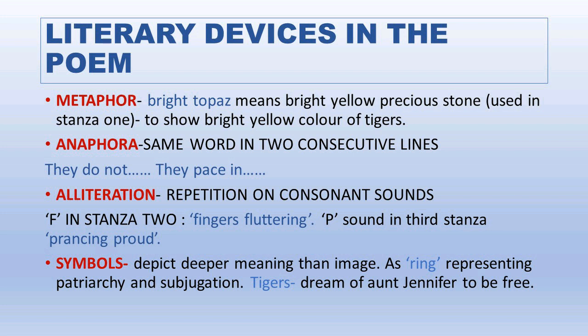Anaphora is seen in two lines: 'They do not...' and 'They pace in...' in the first stanza — the same word repeated in two consecutive lines is known as anaphora. The third literary device is alliteration, which is the repetition of a consonant sound. We see the F sound in 'fingers fluttering' in stanza two, and the P sound in 'prancing proud' in the last stanza. When a consonant sound is repeated, it is called alliteration; when a vowel sound is repeated, it is also referred to as alliteration.